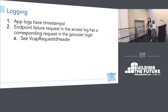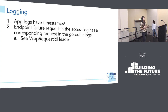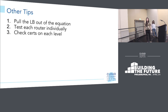The next thing we want to talk about is logging. Your application logs have timestamps too — so if you see an error that manifests in your application log, you can take that timestamp and look at the corresponding logs in your go router or HA proxy to see what was happening at around the same time. We also recently added support for endpoint failure requests in the access log that you can map to a log message in your go router logs by using the vcap request header ID, so you can gather more information about what exactly is happening with the endpoint failure by mapping the two logs.